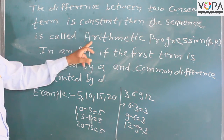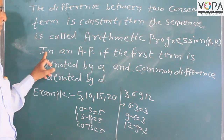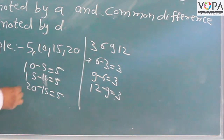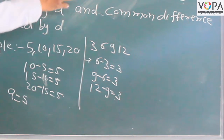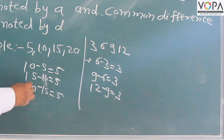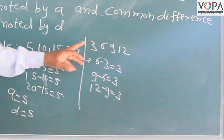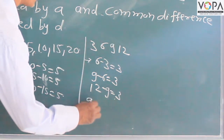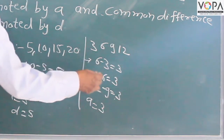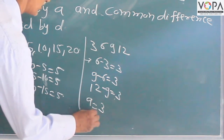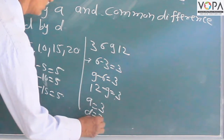In an AP, the first term is denoted by 'a'. For the sequence 5, 10, 15, 20, the first term is 5, therefore a is equal to 5. The difference between consecutive terms is denoted by 'd'. Here d is equal to 5. In another example with 3, 6, 9, 12, the first term a is equal to 3, and d is equal to 3.